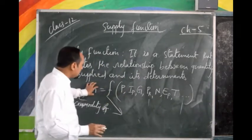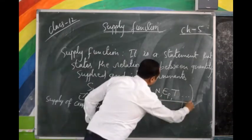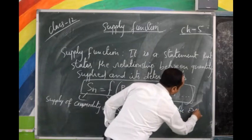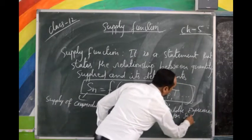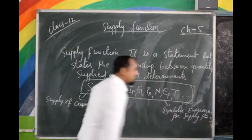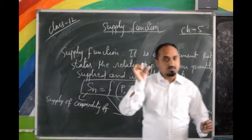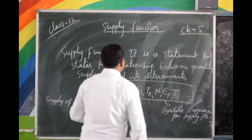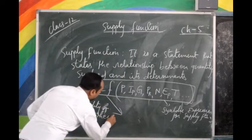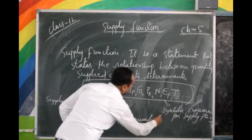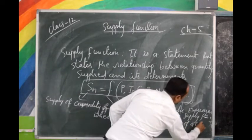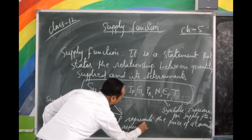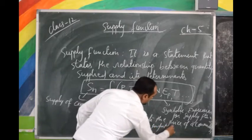These are the functional relationships — the relationship between quantity supplied and its determinants required for the supply function. This is the symbolic expression for the supply function. S(N) represents supply of commodity. F shows the relationship between the determinants. Where P represents price of the commodity, and IP represents input prices.